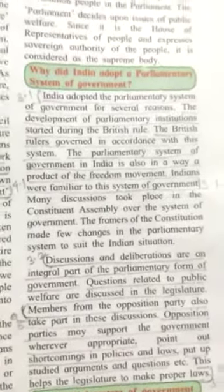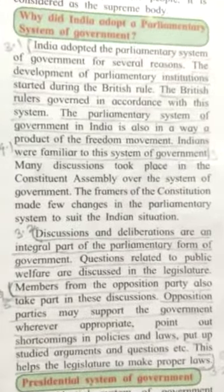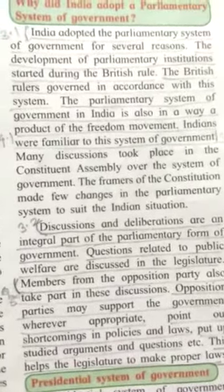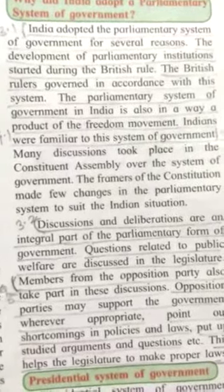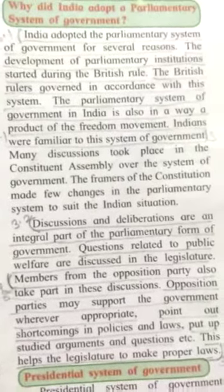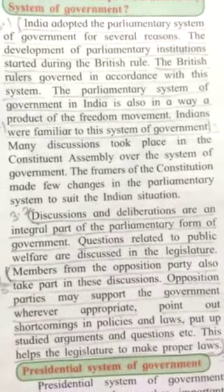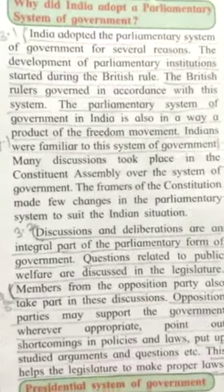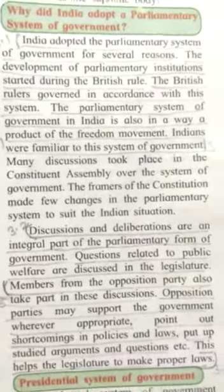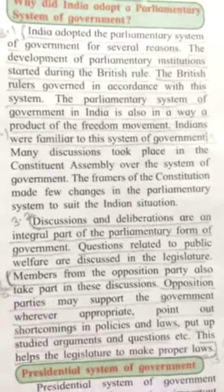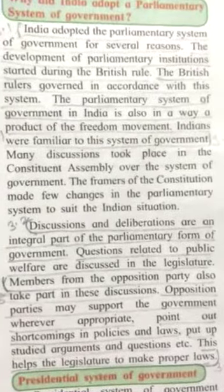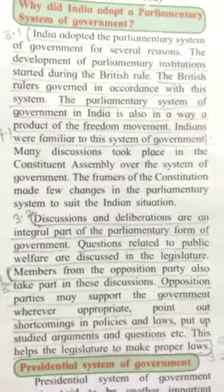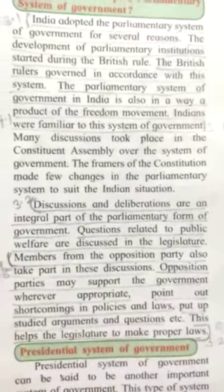Why did India adopt the parliamentary system? India adopted the parliamentary system for several different reasons. The development of parliamentary institutions started during British rule, and Indians were familiar with this system. The parliamentary system in India is also in a way a product of the freedom movement. Many discussions took place in the constitutional assembly, and the framers of the constitution made changes to this parliamentary system. Questions related to public welfare are an important part of this system, and members from the opposition party can also take part in discussions — they may support the government when appropriate, or point out shortcomings and try to resolve them.